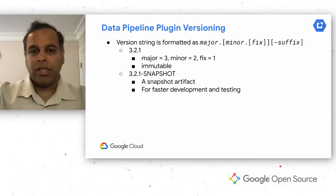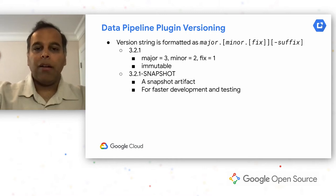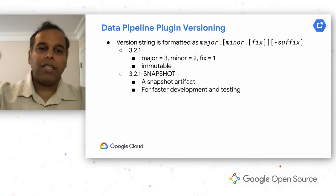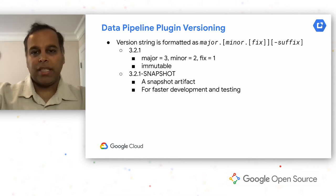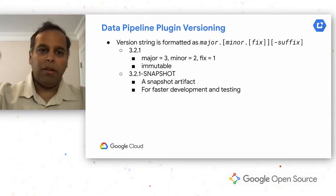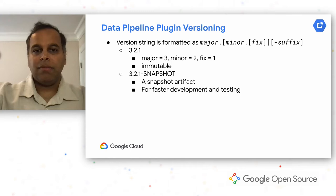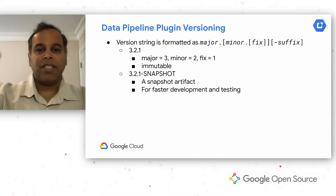Let's talk about plugin versioning and how we release plugins. For development, we allow users to create plugin versioning with a major-minor-fixed version with a snapshot — we follow Semantic Versioning. Any developer can use snapshot versions for their own development and testing. Once they're ready with testing and documentation, they can release it on a hub as a regular version, at which point the plugin becomes immutable. The release on the hub means everybody using CDAP can see your plugins.